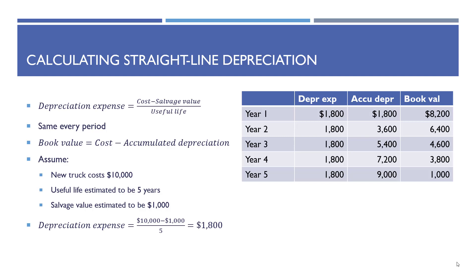Let's assume a new truck costs $10,000, the useful life is estimated to be five years, and the salvage value is estimated to be $1,000. Therefore, depreciation expense would be cost minus salvage value — $10,000 minus $1,000 equals $9,000 — divided by five, or $1,800 per year.